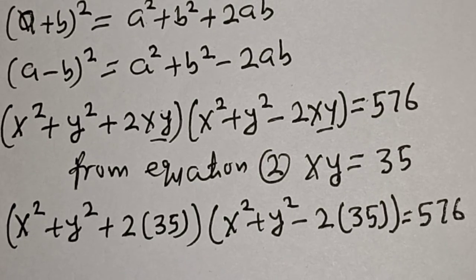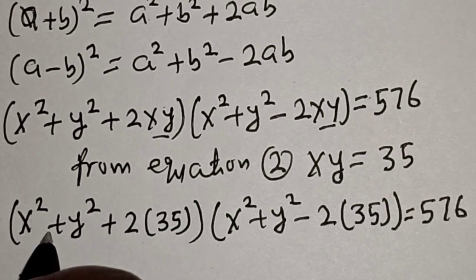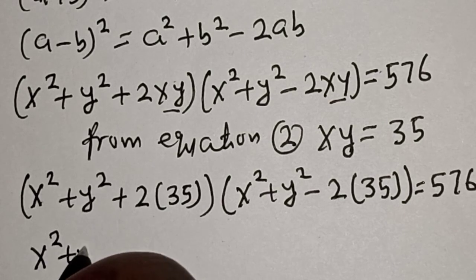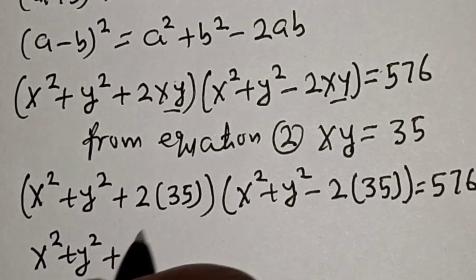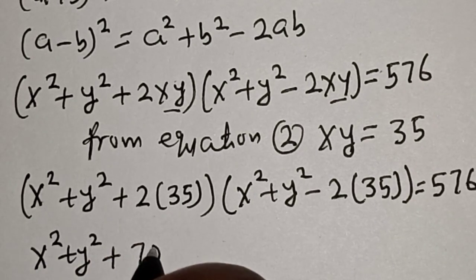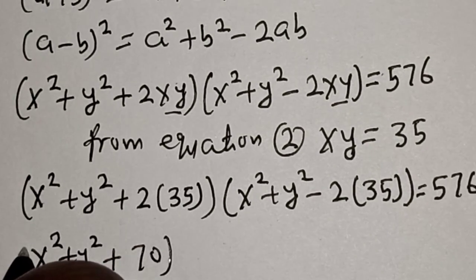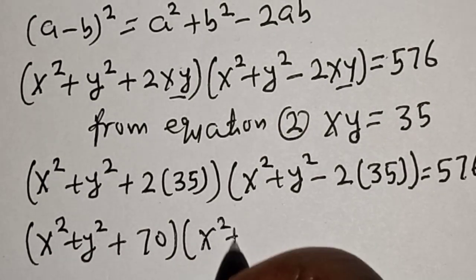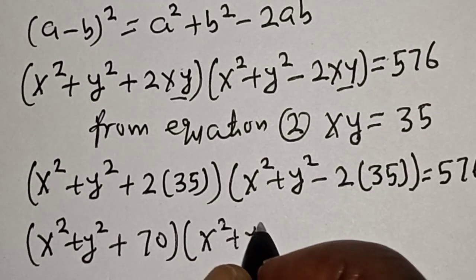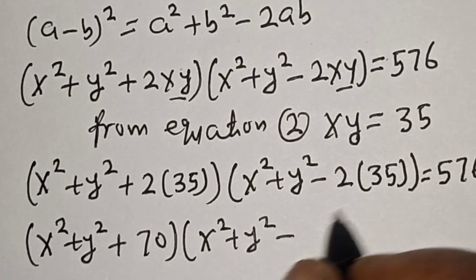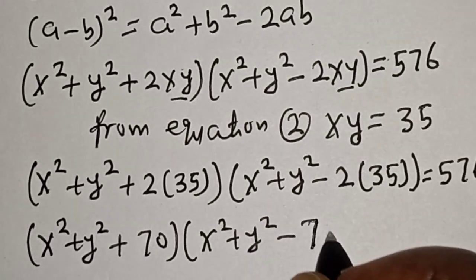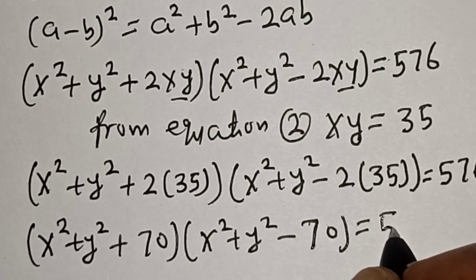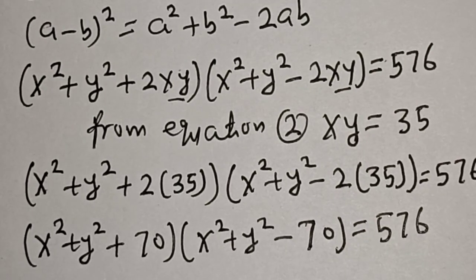So we have (x squared plus y squared plus 2 times 35)(x squared plus y squared minus 2 times 35) equal to 576, which is (x squared plus y squared plus 70)(x squared plus y squared minus 70) is equal to 576.